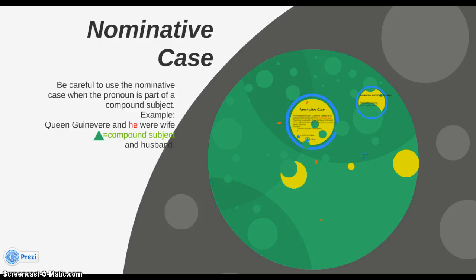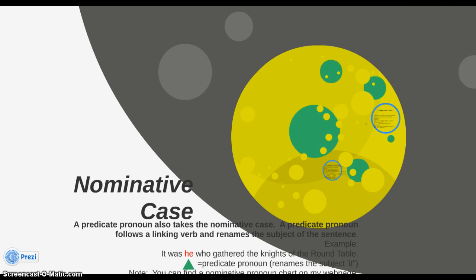You need to be careful to use the nominative case when the pronoun is part of a compound subject — things can get a little more complicated. For example: "Queen Guinevere and he were wife and husband." The easy way to figure this out is to look at the parts separately. You would say Queen Guinevere as the subject by herself, and you would say he if he were the subject by himself. That's why you need to be sure to use the correct case.